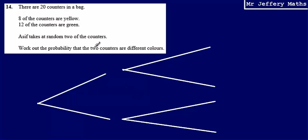So here we've got 8 of the counters are yellow, so we'll call that bit there yellow, 12 of the counters are green. The probability he takes a yellow is 8 over 20, and the probability he takes a green is 12 over 20. And that's on his first pick, so he can either choose a yellow on his first pick or a green on his first pick. And those are the probabilities.